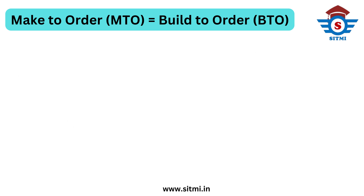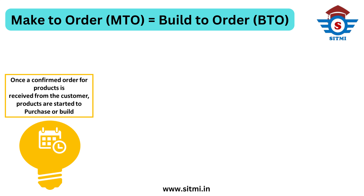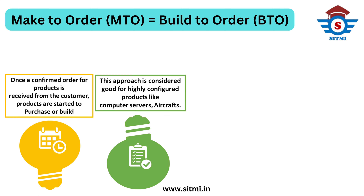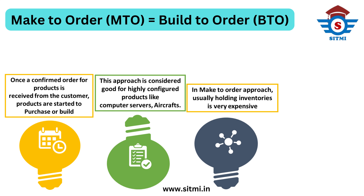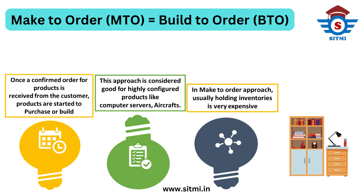The next approach is Make to Order (MTO), also referred to as Build to Order. MTO is a production approach where, once a confirmed customer order for a particular product is received, raw materials are purchased and finished goods are built. This approach is considered good for highly configured products like computer servers or aircrafts, where holding inventories is very expensive. Raw material buying, manufacturing, and assembly starts only after a committed order is received. Another example of Make to Order can be furniture for your home, where a proper size and requirements must be specified so that raw materials can be procured and it can be built.